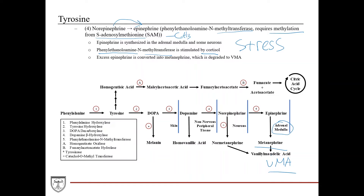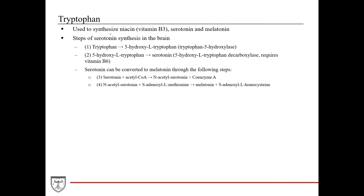Tryptophan is used to synthesize niacin, which is a form of vitamin B3. It is also used to synthesize serotonin and melatonin. For serotonin synthesis in the brain, tryptophan is converted into 5-hydroxy-L-tryptophan, catalyzed by tryptophan-5-hydroxylase. Then 5-hydroxy-L-tryptophan is converted into serotonin, catalyzed by 5-hydroxy-L-tryptophan decarboxylase, which requires vitamin B6.